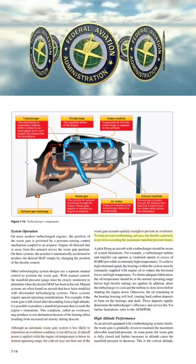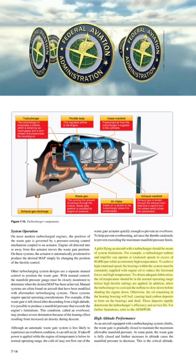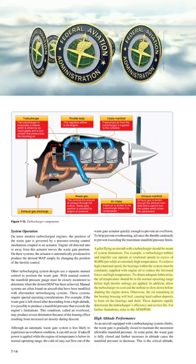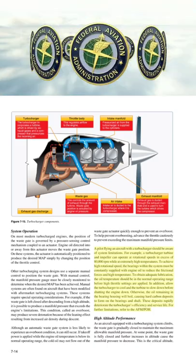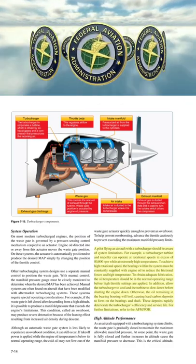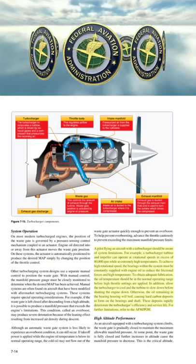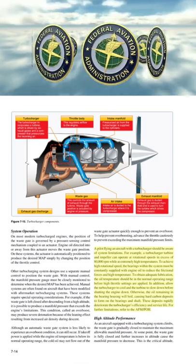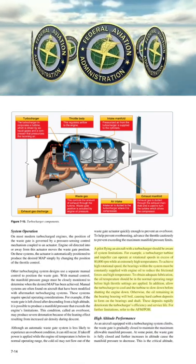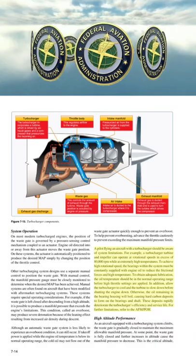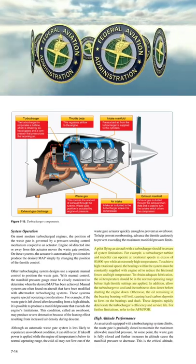Although an automatic wastegate system is less likely to experience an overboost condition, it can still occur if takeoff power is applied while engine oil temperature is below its normal operating range, as cold oil may not flow out of the wastegate actuator quickly enough. To help prevent overboosting, advance the throttle cautiously to prevent exceeding maximum manifold pressure limits. A turbocharger turbine and impeller can operate at rotational speeds in excess of 80,000 RPM at extremely high temperatures. The bearings must be constantly supplied with engine oil to reduce friction and high temperature, so oil temperature should be in the normal operating range before high throttle settings are applied. Also, allow the turbocharger to cool and the turbine to slow down before shutting the engine down; otherwise, oil remaining in the bearing housing will boil, causing hard carbon deposits to form, rapidly deteriorating efficiency and service life.